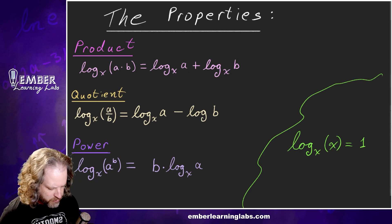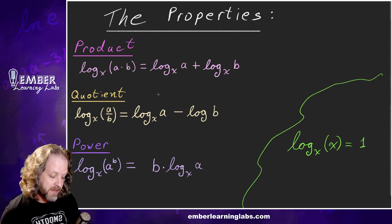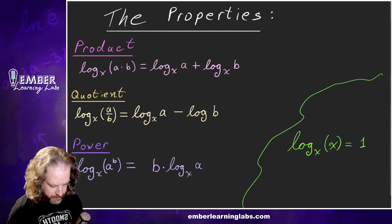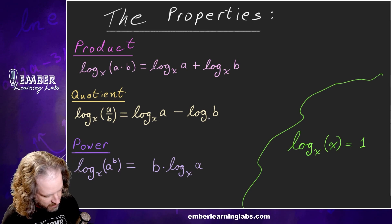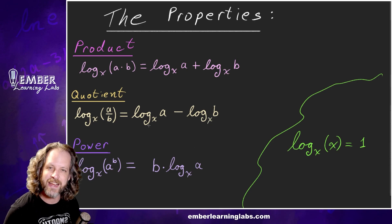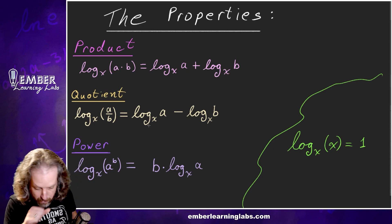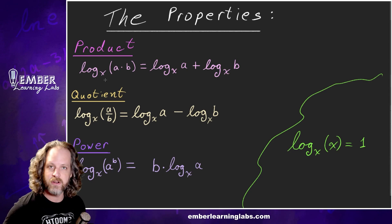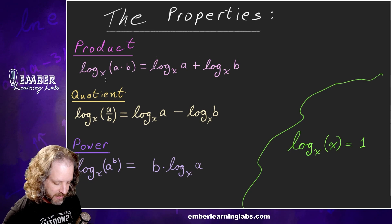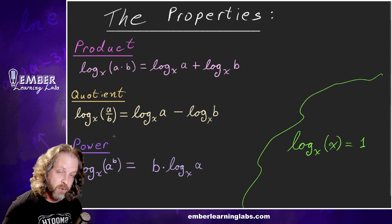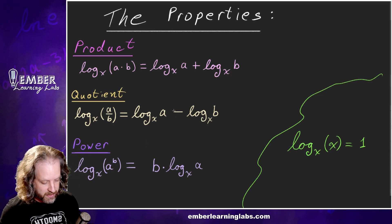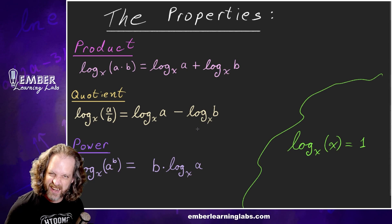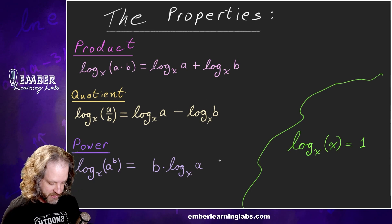If we have a quotient in the argument, we can split that up into the log of the numerator minus the log of the denominator — and the base isn't going to change. The order does matter here because you have to have the numerator first and then the denominator second, because that minus sign will change what it is.